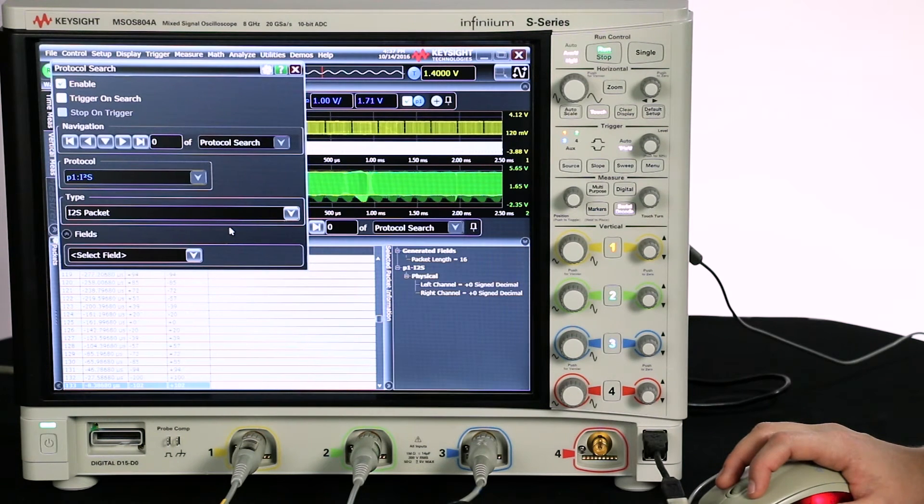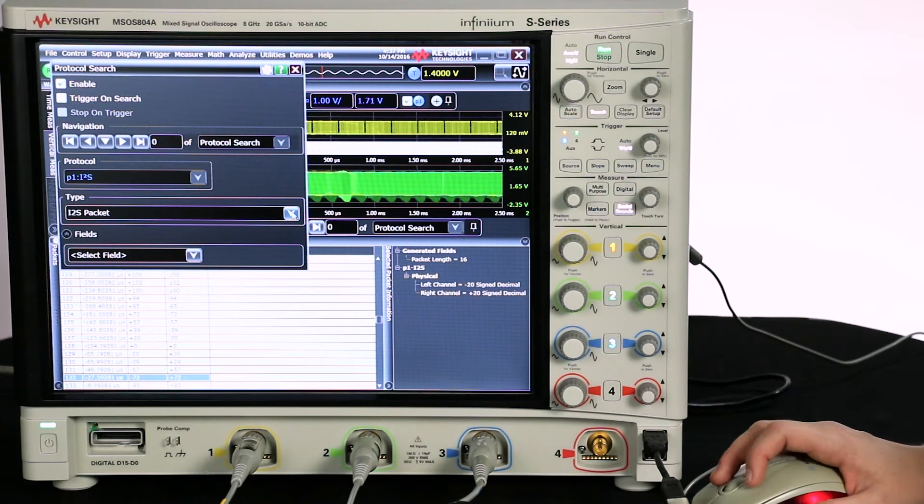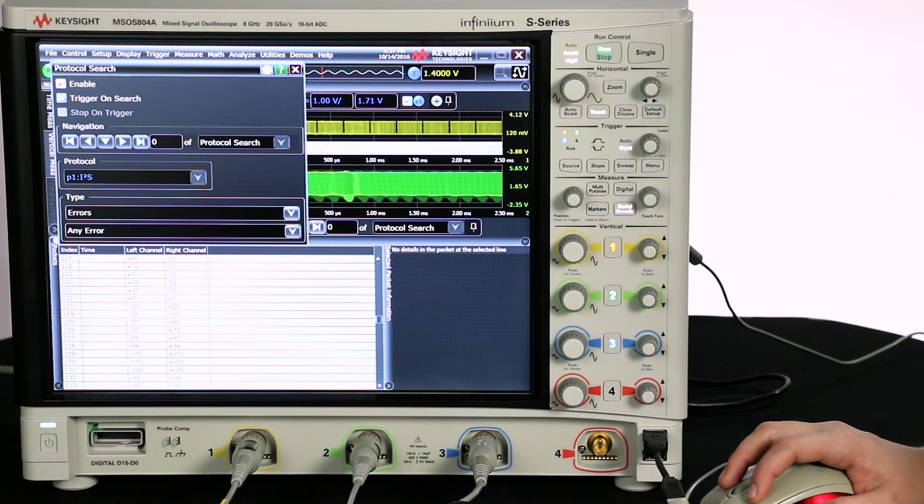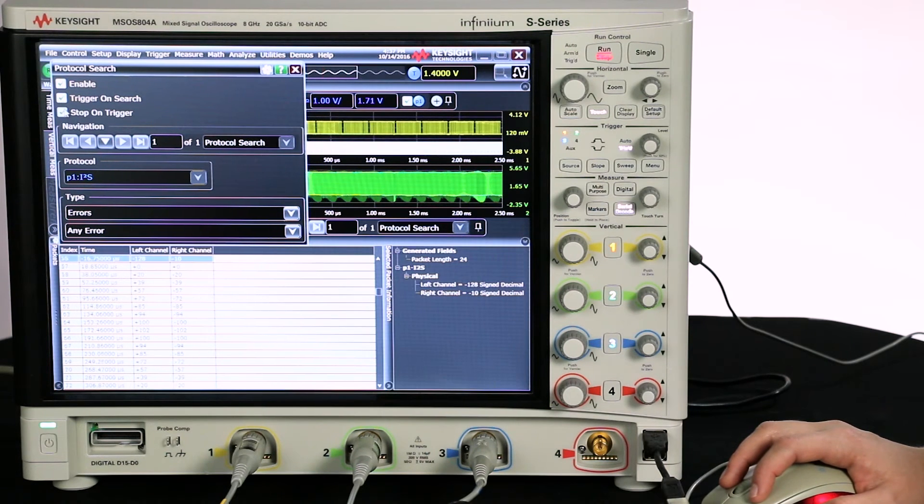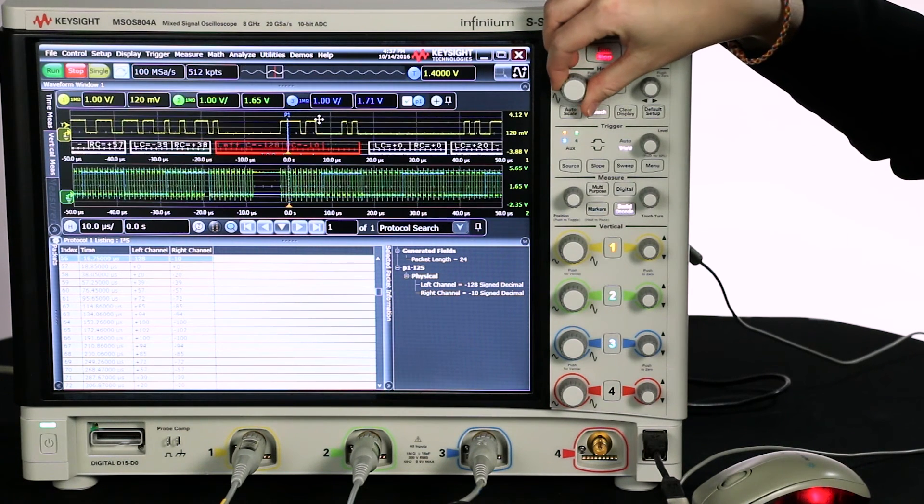Let's click this magnifying glass. Instead of triggering on any I Squared S packet, let's go ahead and trigger on an error. So we'll trigger on search, and we'll stop on trigger. And you can see we've triggered on an error, so let's zoom in and see that a little bit closer.